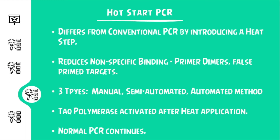Hot start PCR is a technique where the conventional PCR follows a heat start. In many cases during mixing of all the components, Taq polymerase might be active at room temperature or even on ice. This might lead to nonspecific primer annealing which could lead to lower product yield. So this technique reduces nonspecific binding. It takes place as three types: manual, semi-automated, or automated methods.